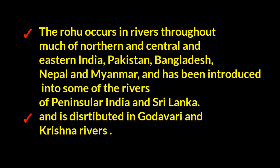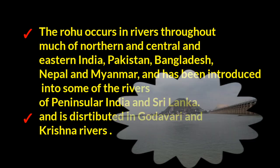Rohu occurs in rivers throughout much of northern, central, and eastern India, Pakistan, Bangladesh, Nepal, and Myanmar. It has been introduced into some rivers of peninsular India and Sri Lanka, and is distributed in Godavari and Krishna rivers in Telangana and Andhra Pradesh.